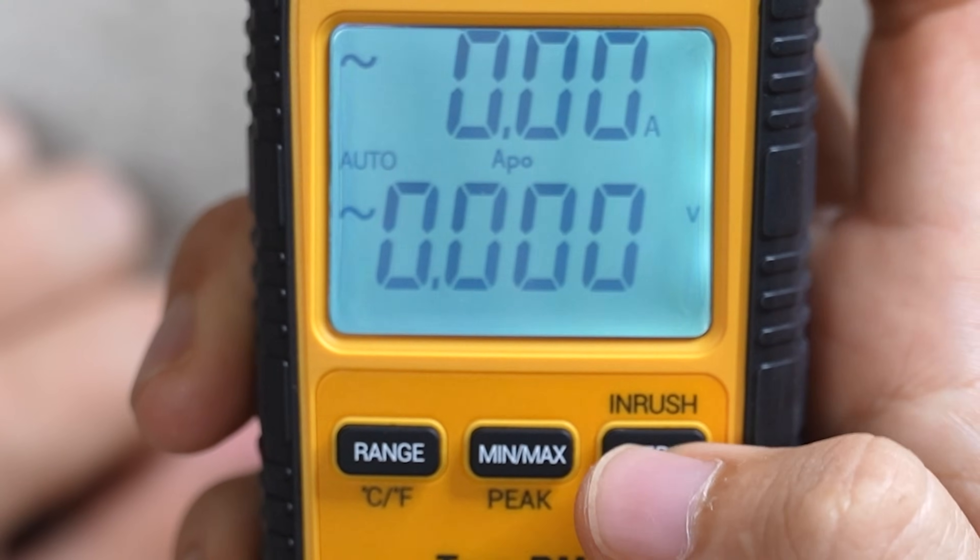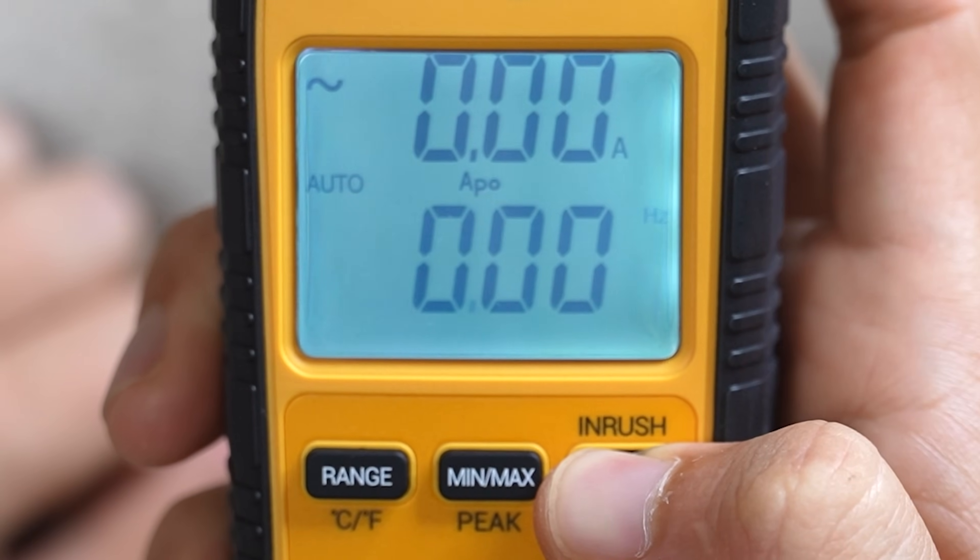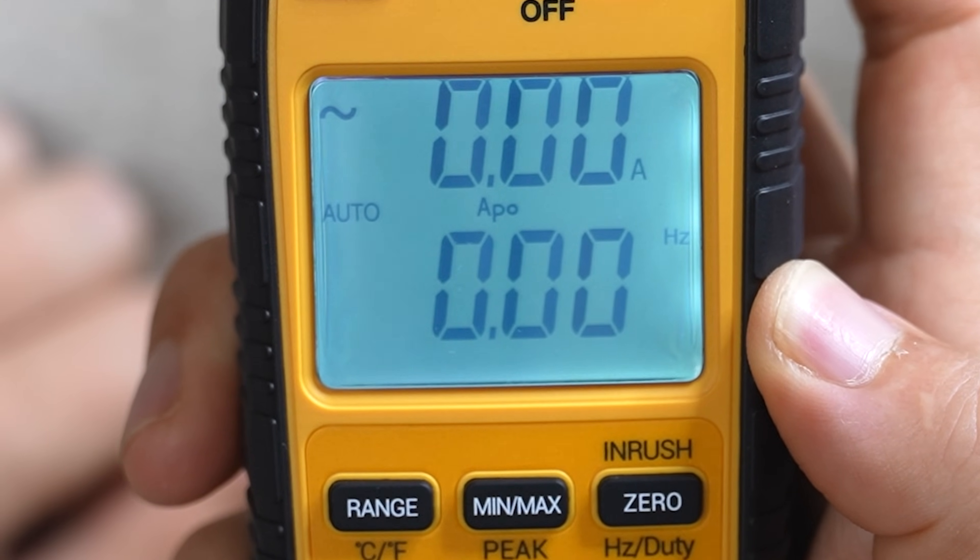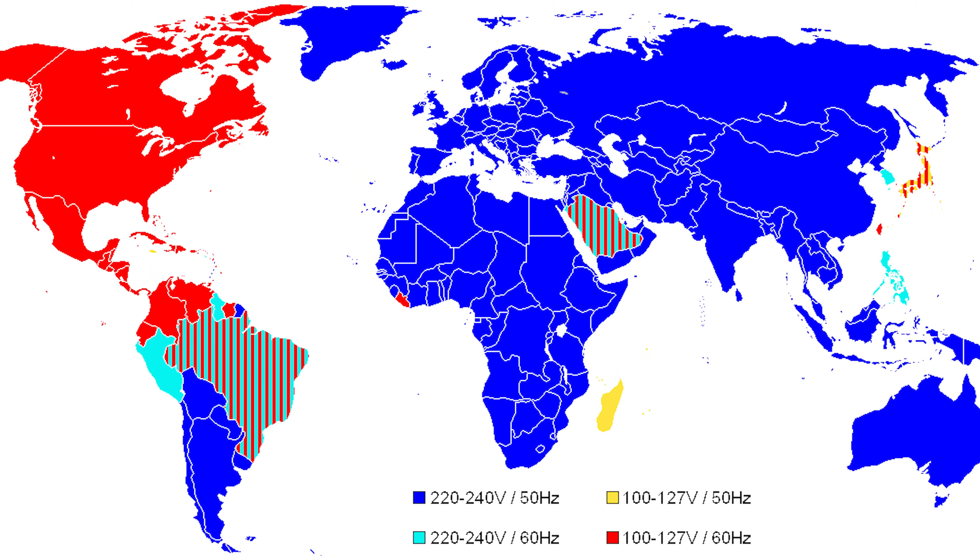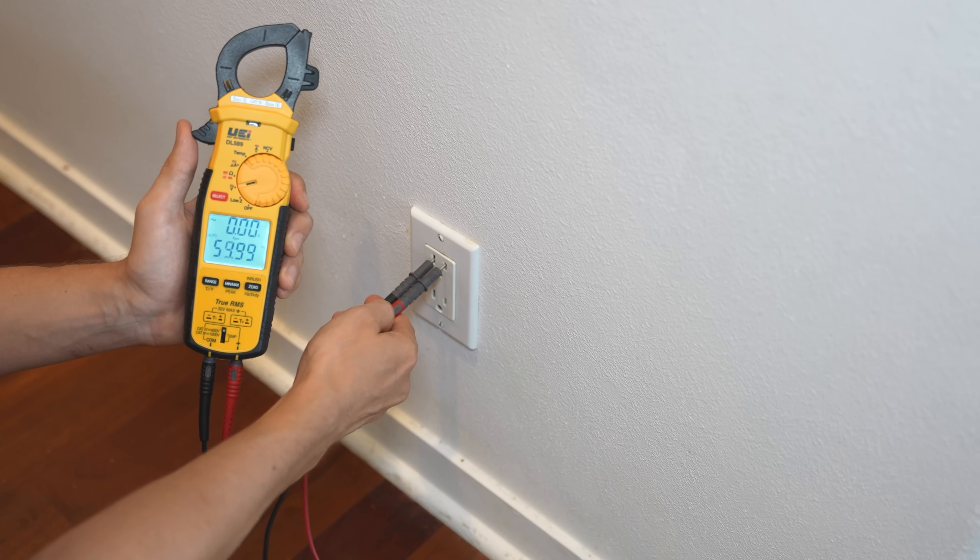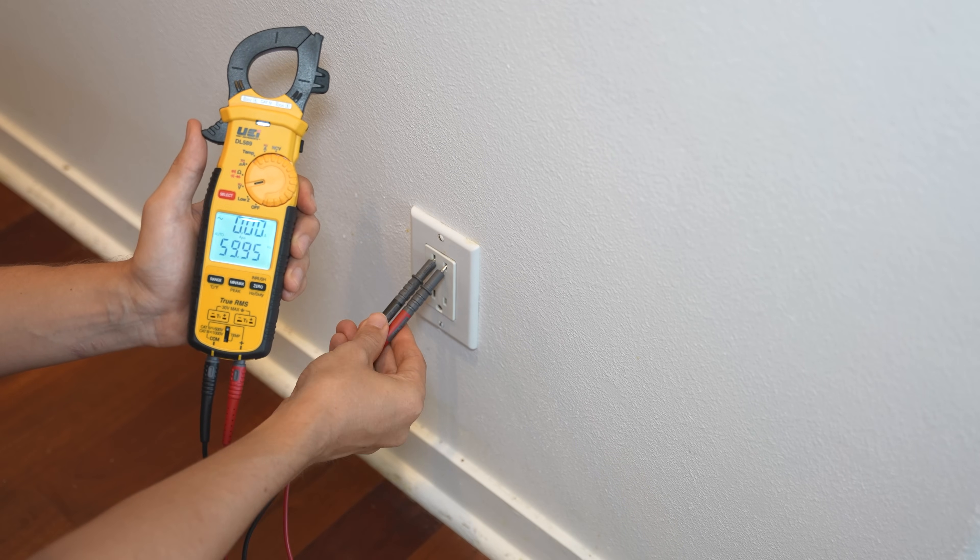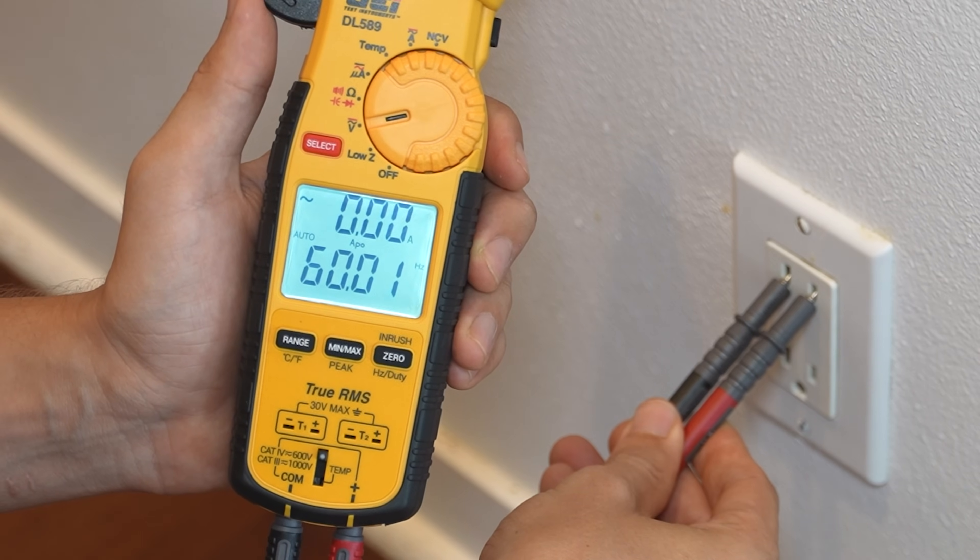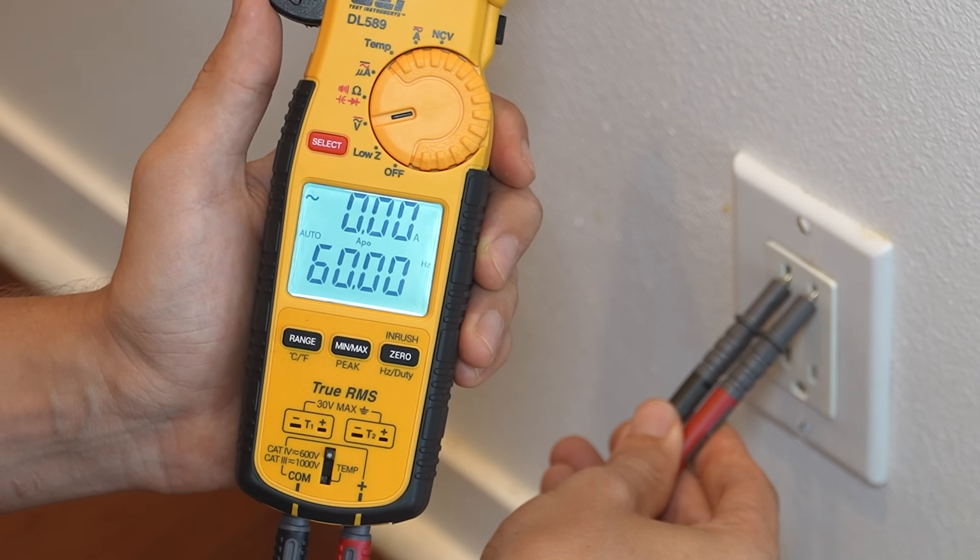Next up, we have HZ, which measures frequency, and frequency is the rate at which current changes direction per second. In America, the frequency we use is 60 Hz, but in many other parts of the world, such as Australia, China and Germany, they use 50 Hz. Frequency is only measured with alternating current, and an easy way to check it is to simply stick your meter leads into a power outlet and see what you get. You should have exactly 60 or something very close to it.